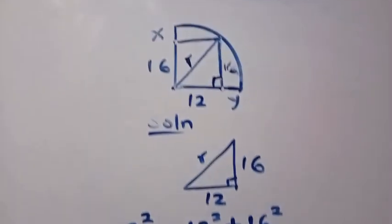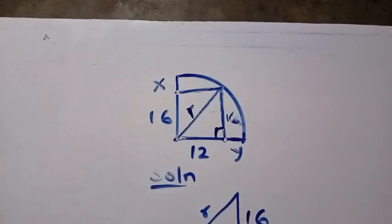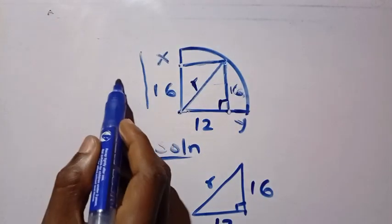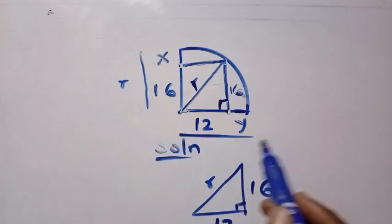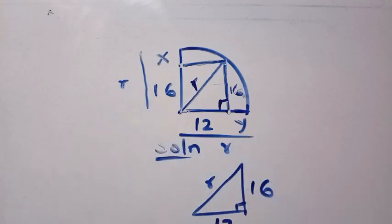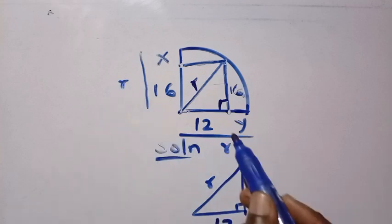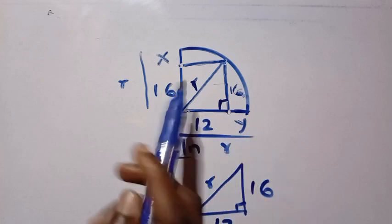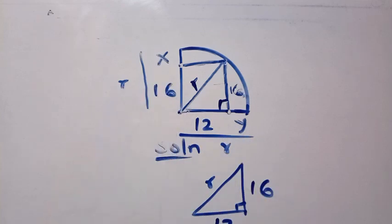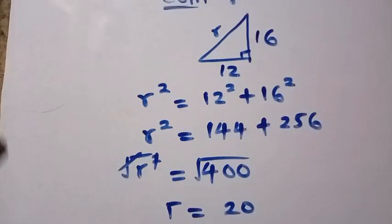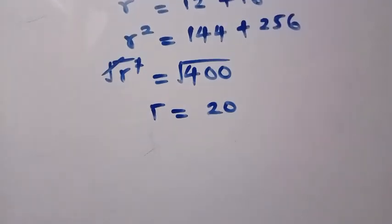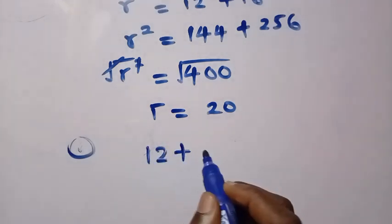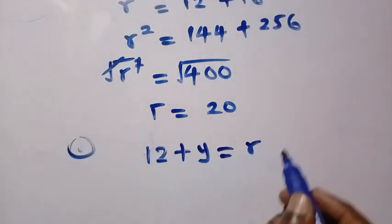So r equals 20. From the diagram, this line is r and this line is also r. The sum of 12 and y equals r, and the sum of x and 16 also equals r.